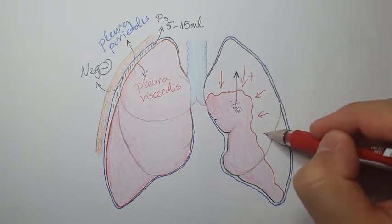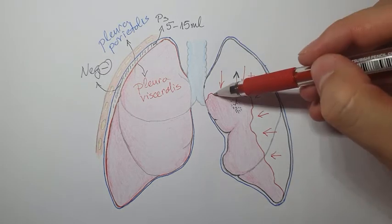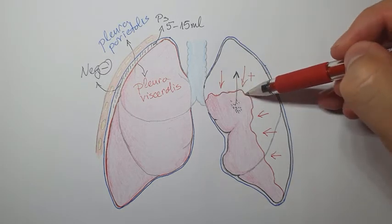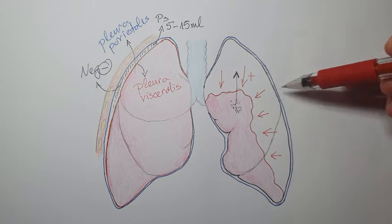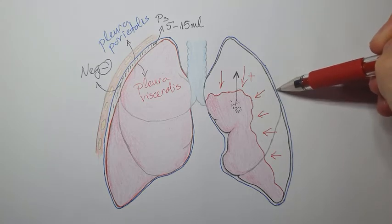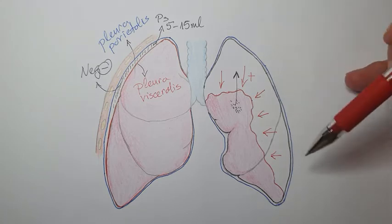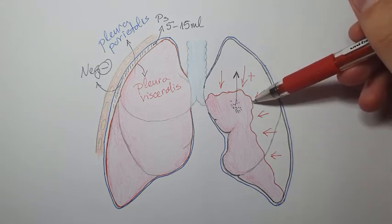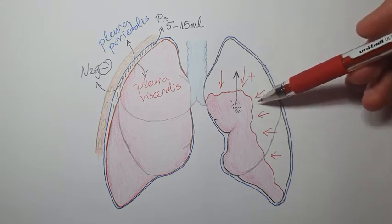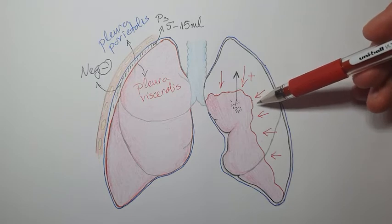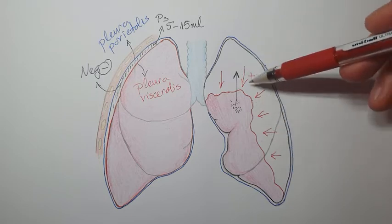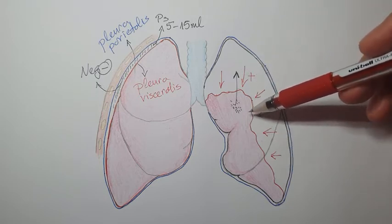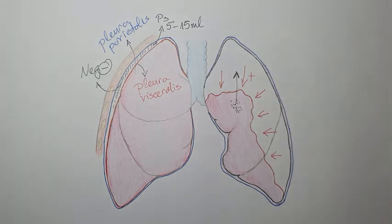Once air is in the pleural space, the line of the visceral pleura is not where it should be. On a normal X-ray the visceral pleura is not visible, but it can only be seen once we have a pneumothorax that collapses the lung — and that is a very important diagnostic sign.